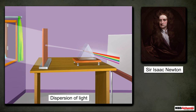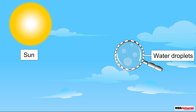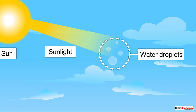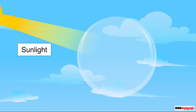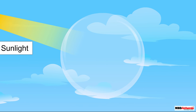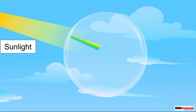Now that we have understood what dispersion of light is, let's understand how it causes the formation of a rainbow. A rainbow is generally formed when the sun appears just after it has rained. At this time, many water droplets are present in the air. When sunlight passes through these water droplets, each droplet acts like a small prism and refracts the incident sunlight.